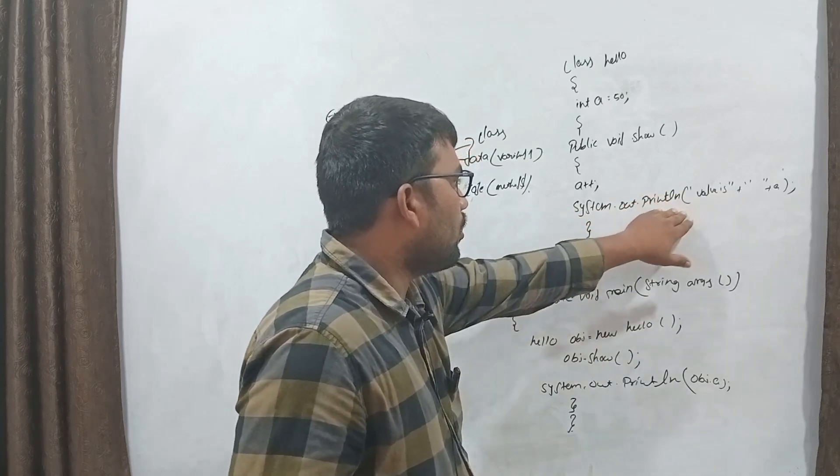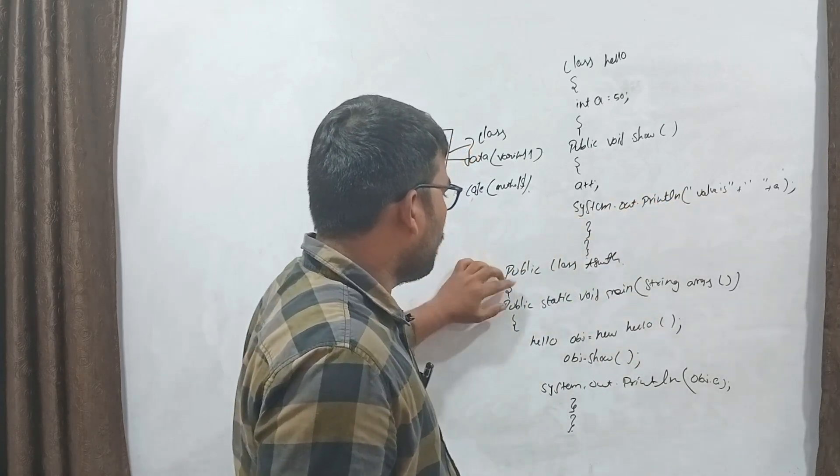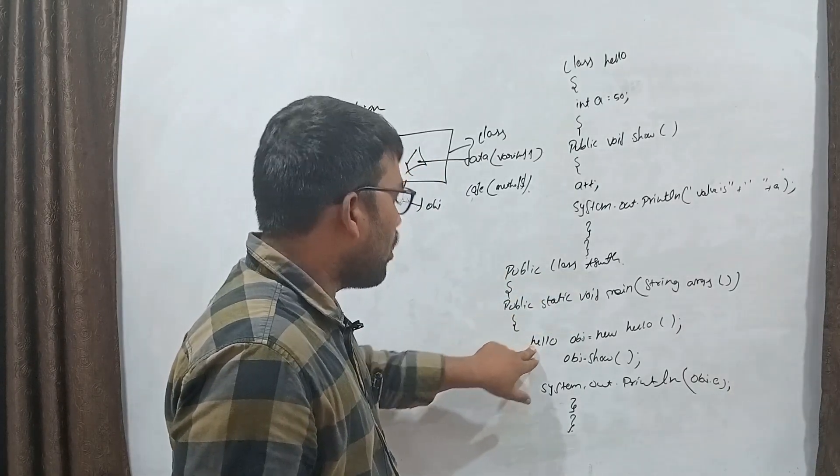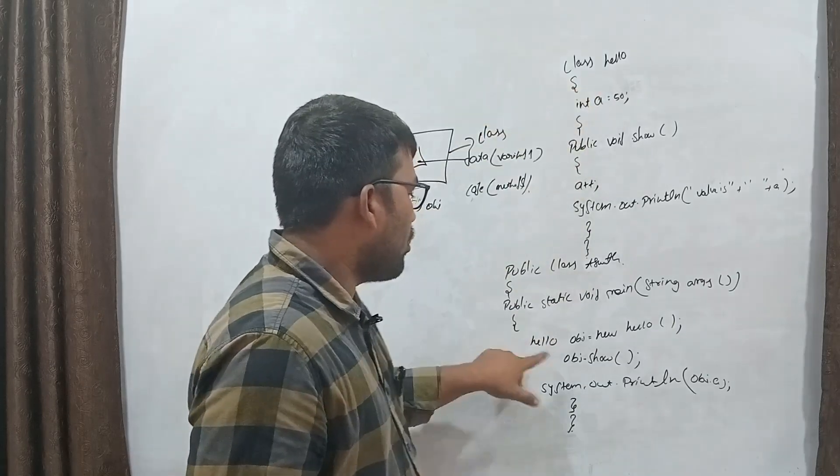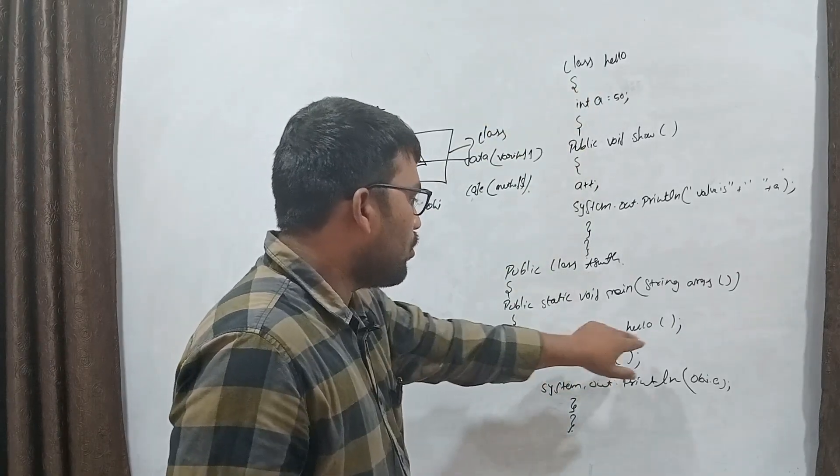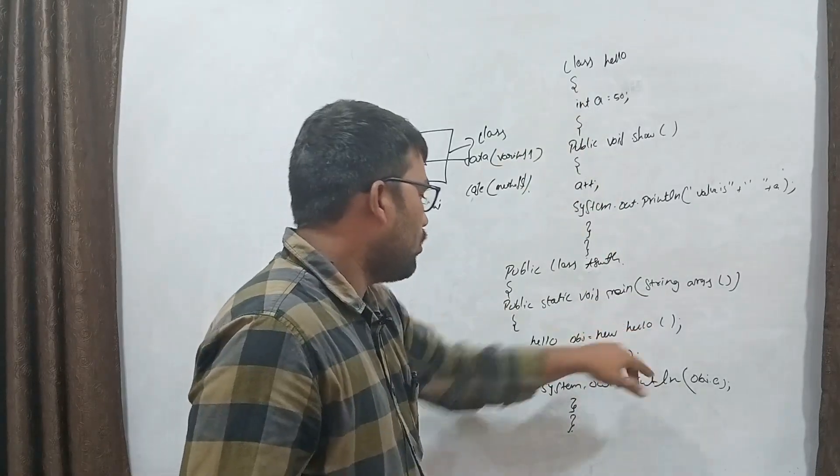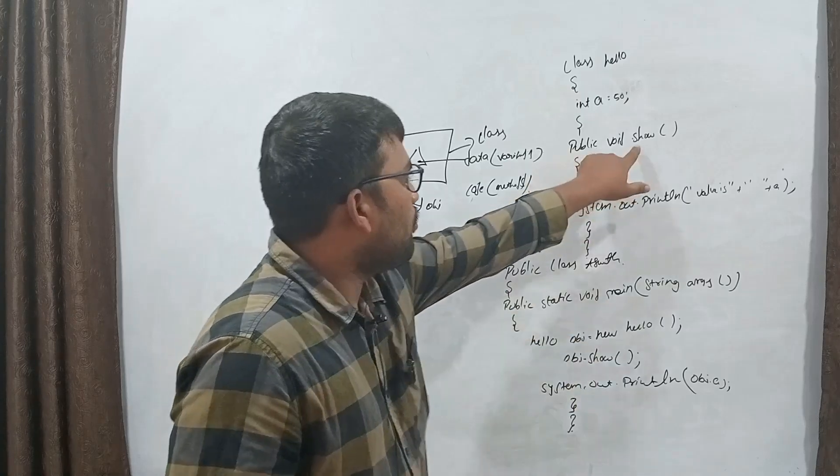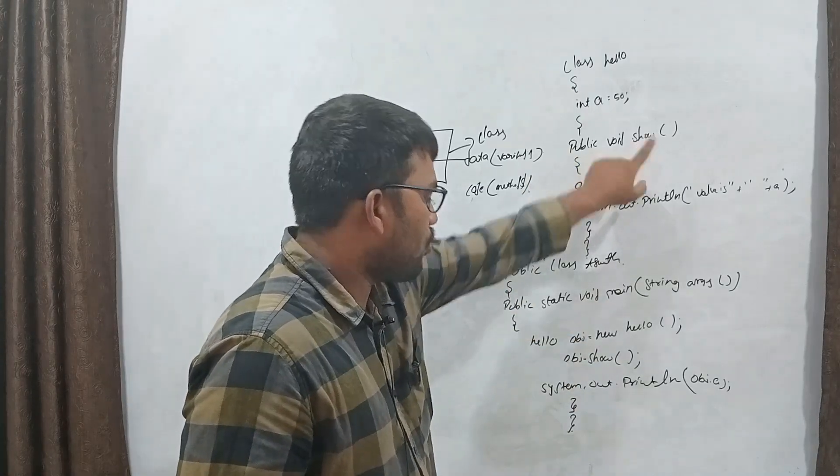We take the output for main classes and create an object. Object means class name, class means hello, object. Object name we take any name, is equal to new, is equal to again, hello. So call the method, method is object test, method name is code, is stroke.